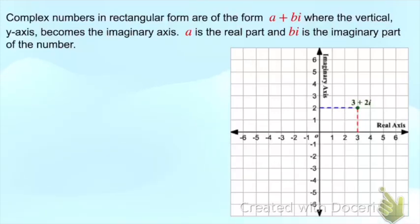Complex numbers in rectangular form are of the form a + bi, where the vertical y-axis becomes the imaginary axis. A is the real part and bi is the imaginary part of the number. For example, 3 + 2i is graphed by moving 3 units on the real axis and up 2 units on the imaginary axis, and we place our point.